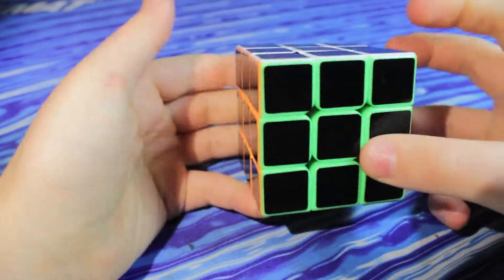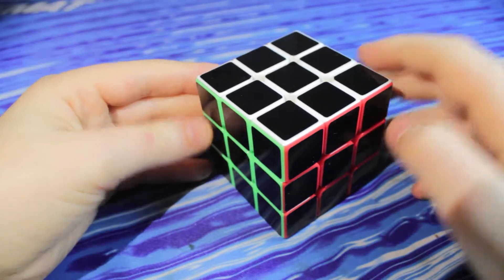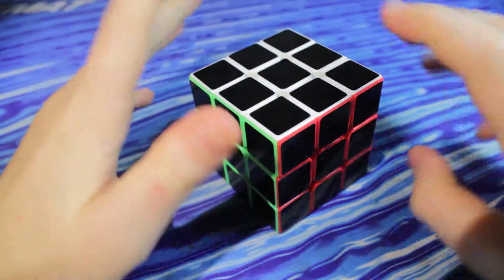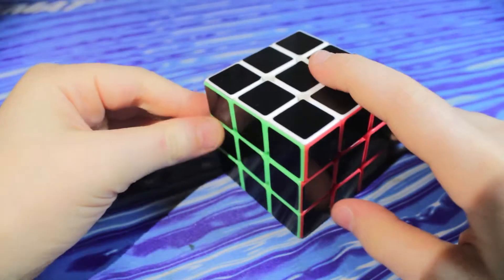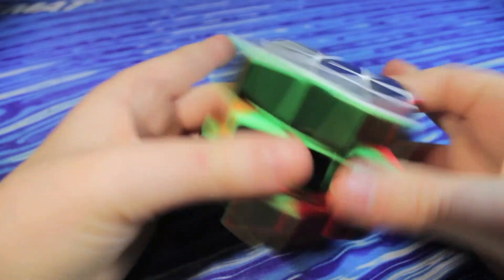I will link the supplies for this in the description. Basically, all it is is just the black stickers and a stickerless cube. It could be 2x2, 3x3, 4x4, whatever you want.